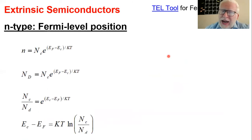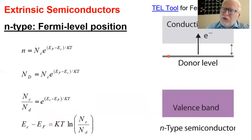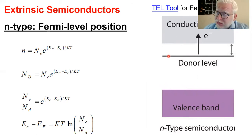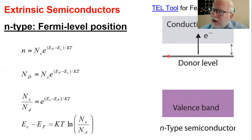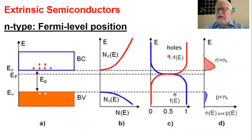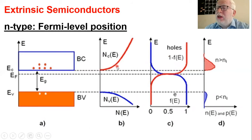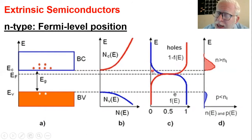Accordingly, since the Fermi level is an indicator for the ratio of electrons to holes, the Fermi level will move upward toward the conduction band compared to the valence band — simply because the number of electrons is greater than the number of holes. Graphically, the number of states stays the same, but the probability changes due to the Fermi level shift, giving you more electrons and fewer holes.